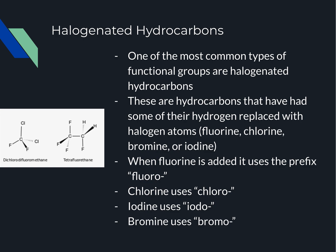Just like we have prefixes we use for branches, we also use prefixes for halogenated hydrocarbons. If there's a fluorine present, we indicate it with fluoro. Chlorine is indicated by chloro, iodine is indicated by iodo, and bromine is indicated by bromo.